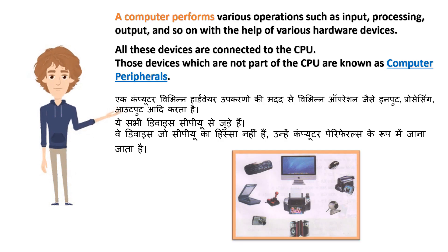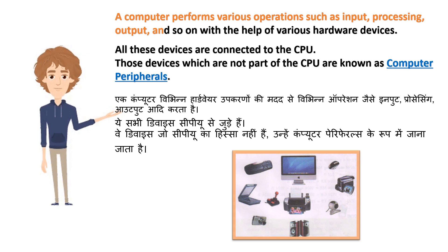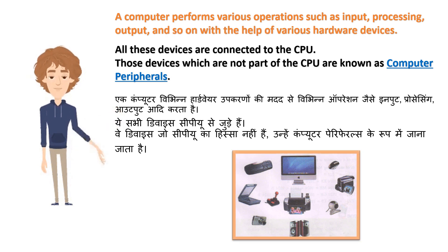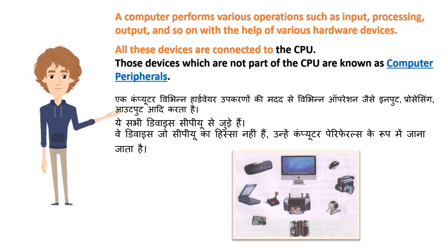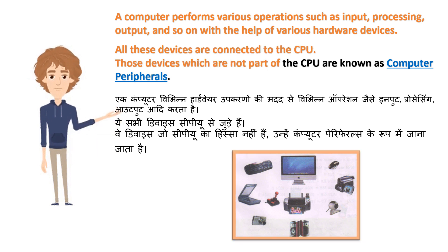A computer performs various operations such as input, processing, output, and so on with the help of various hardware devices. All these devices are connected to the CPU. Those devices which are not part of the CPU are known as Computer Peripherals.